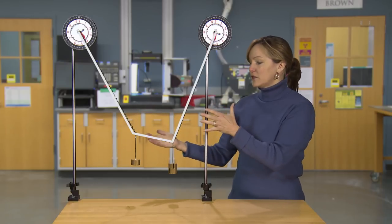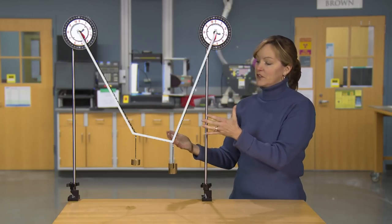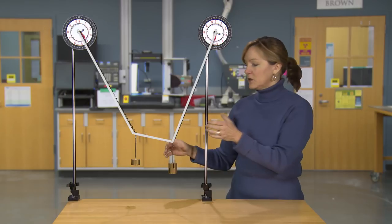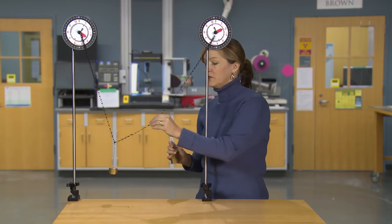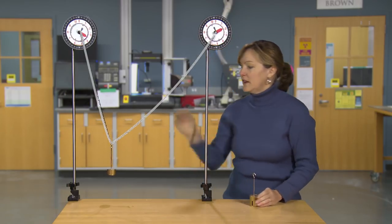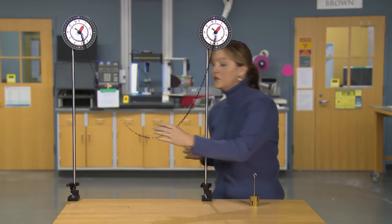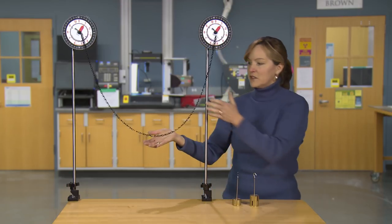So this is the funicular form for a cable, or a chain in this case, with two unequal loads. We can get the funicular form for a single load, and then the funicular form for no load, which is also called a catenary, but they're all funicular forms.